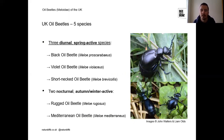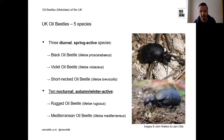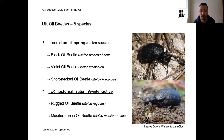The UK has five species of true oil beetle. These can be split into three daytime spring-active species — the black, violet and short-necked oil beetles — and two nocturnal winter-active species — the rugged and Mediterranean oil beetles. We'll go through each species covering habitats, times of year, and identification features.